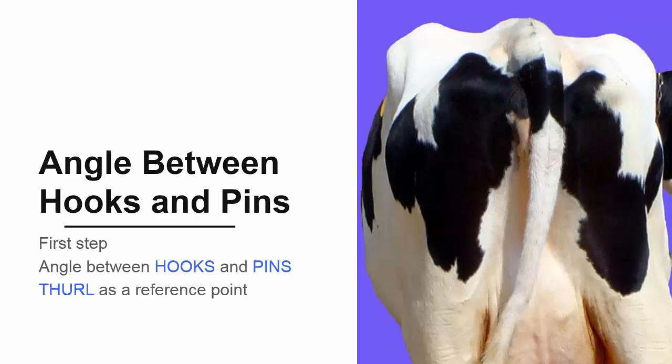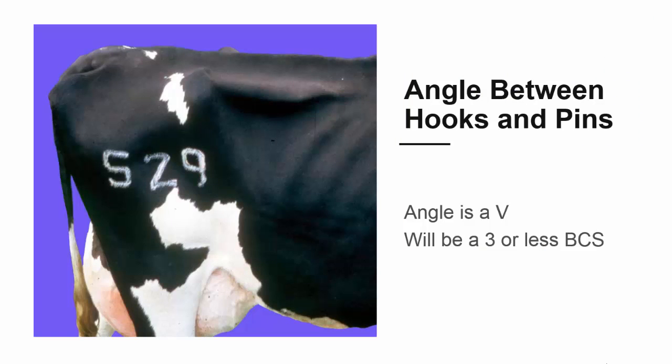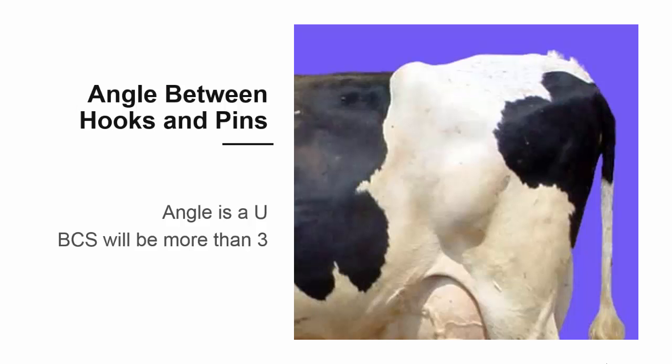The first decision you make will divide cows into two groups, those with a body condition score less than or equal to 3 and those with a score greater than 3. From the side view, we evaluate the angle between the hooks and pins using the thurl as a reference point. If the angle between the hooks and pins forms a V, the cow will have a body condition score of 3 or less. On the other hand, if the angle forms a U, the cow's body condition score will be more than 3.